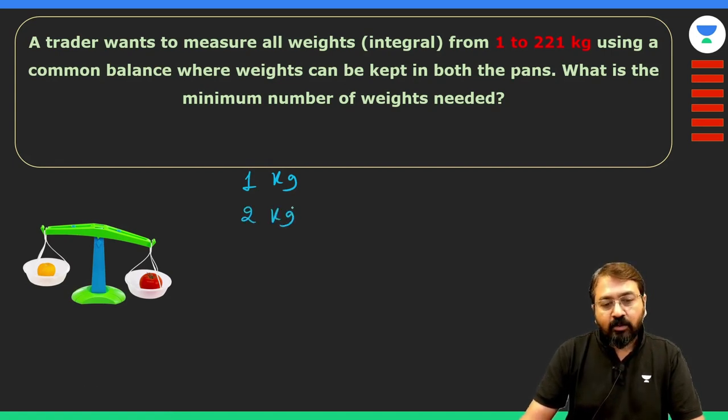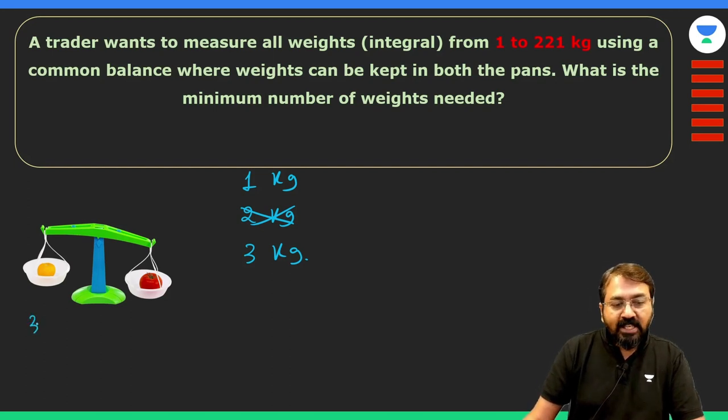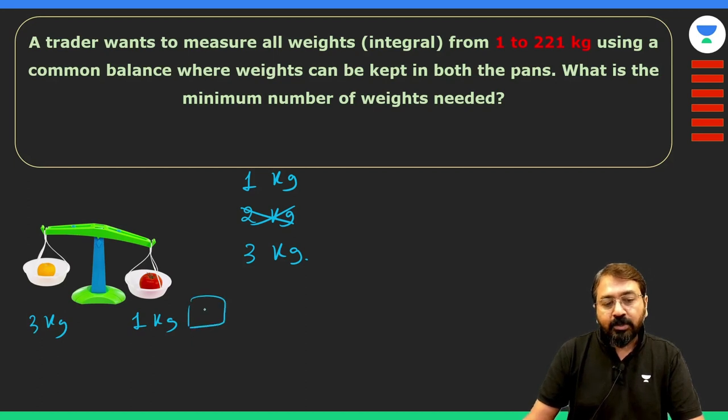Now, instead of taking 2 kg weight, we can directly take 3 kg weight. Because using 3 kg and 1 kg, we can definitely measure 2 kg. We can put 3 kg on the left pan and 1 kg on the right pan, and put some commodity here. That commodity will be of 2 kg weight. So yes, by using 1 kg and 3 kg, we can measure even 2 kg.